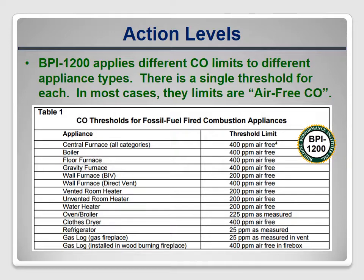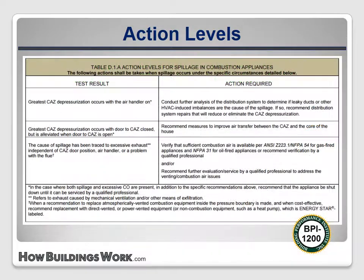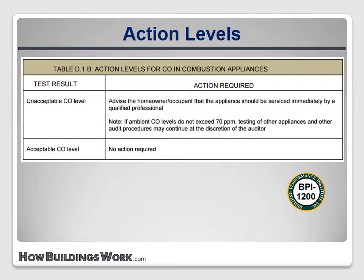BPI 1200's CO threshold table only sets the thresholds; the actions to be taken are listed in Annex D of the Standard. The spillage failure action table requires the auditor to diagnose the cause of spillage to determine the appropriate corrective action, which may require further analysis by the auditor or a qualified specialist. The carbon monoxide action levels table is shorter and simpler: if the CO level exceeds the threshold, the auditor should recommend that the appliance be immediately repaired by a qualified professional.